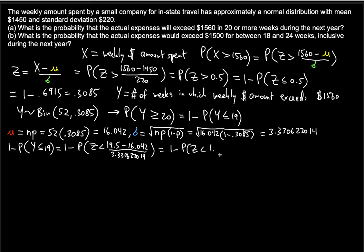We round the Z value to the nearest hundredth — 1.038 rounds to 1.04 — because we cannot go to the thousandths place with the table. So we need 1 − P(Z < 1.04).